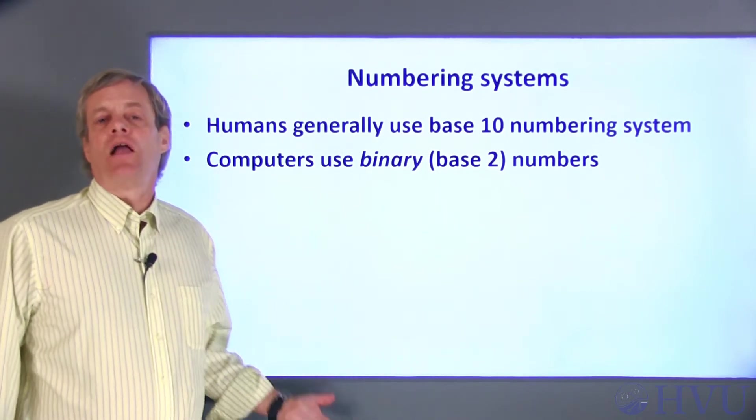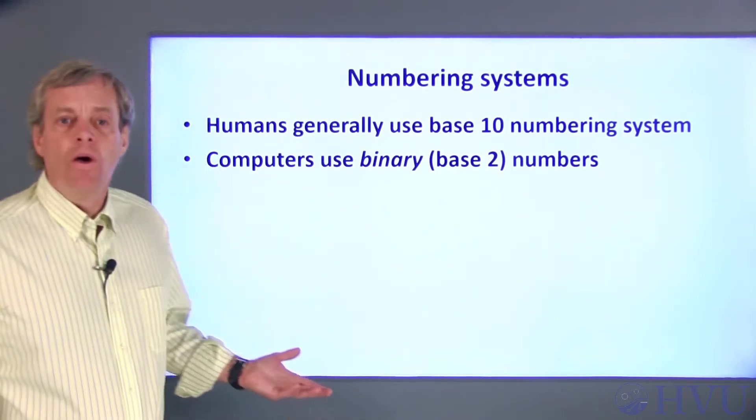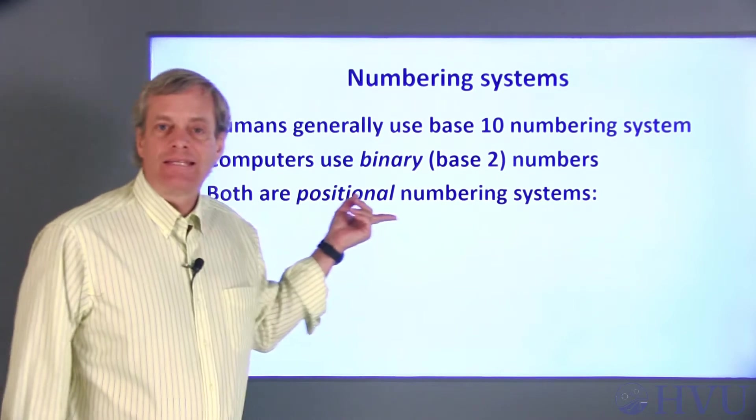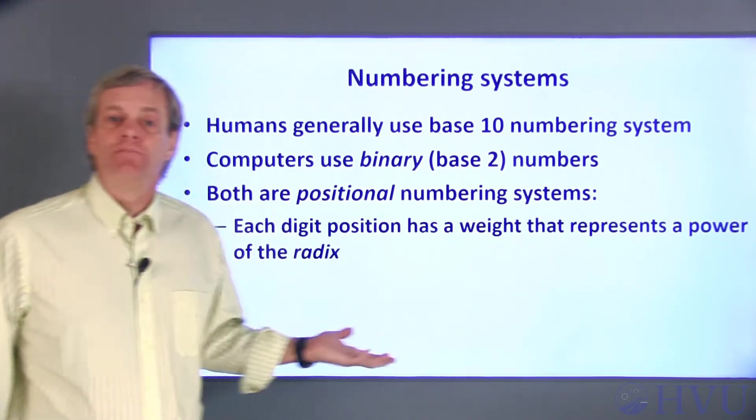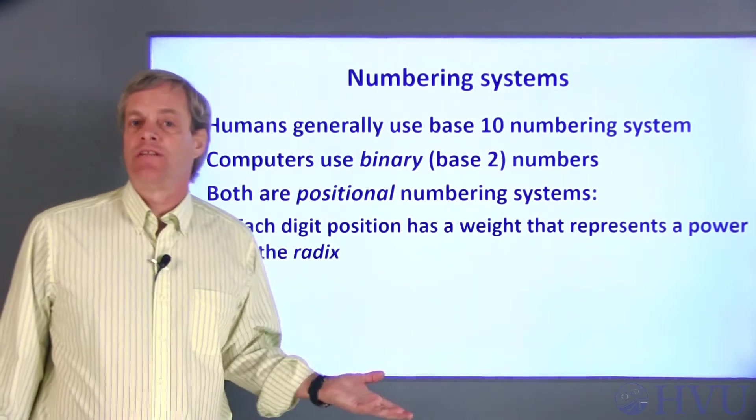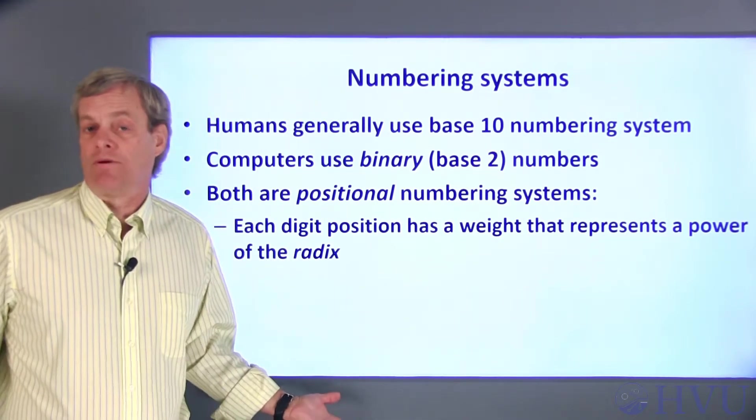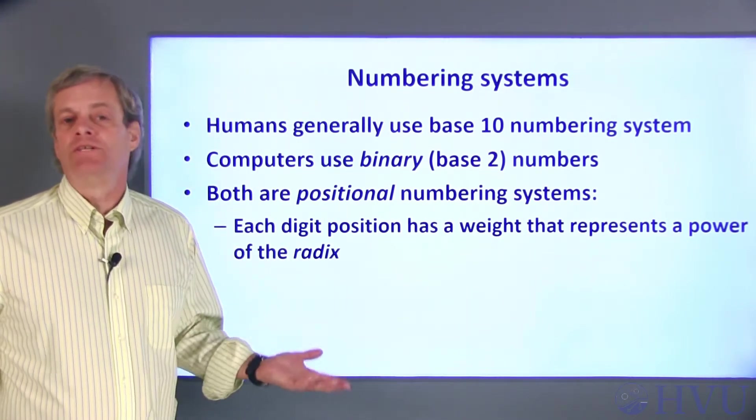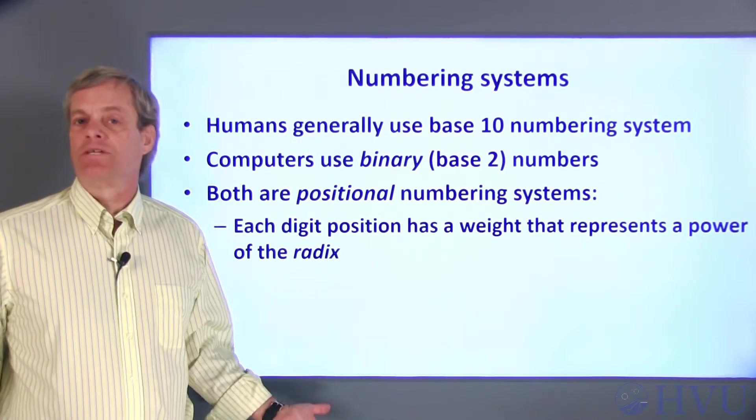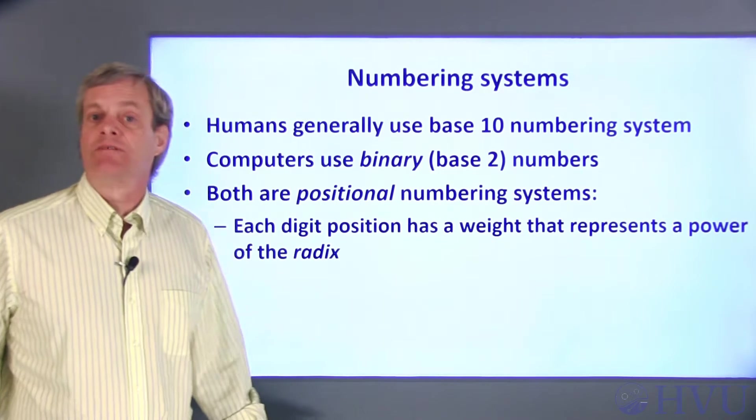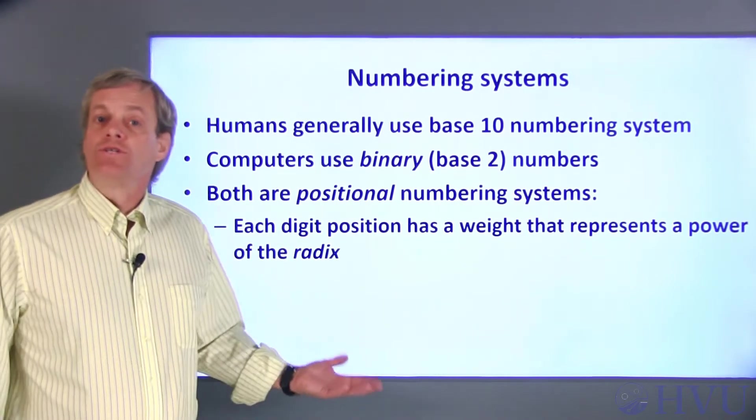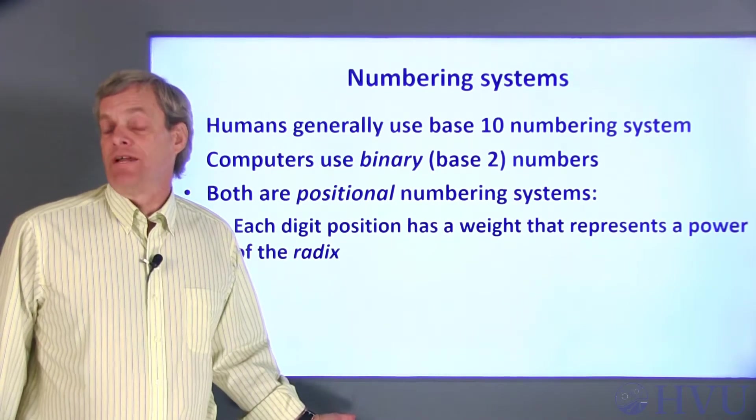Now I'll introduce some terminology relative to numbering systems. Both binary and base 10 systems are positional numbering systems. That just means that the position of each digit in the number provides information about the number. More specifically, the position provides a weight that represents the power of what's called the radix. The radix of a numbering system is the same as the base. So the base 10 numbering system's radix is 10.